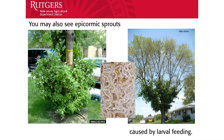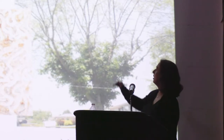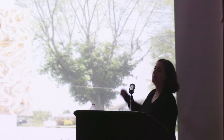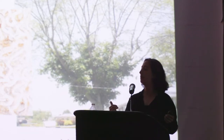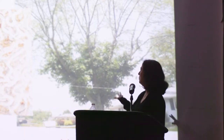You may also see a lot of epicormic sprouting in your tree. Emerald ash borer likes to start from the top of the tree and work its way down. The larvae feeding through the cambium cuts off the flow of water and nutrients, so the tree starts to die from the top down and flushes growth closer to the bottom of the stem to photosynthesize and stay alive. Those reflexive sprouts are another good indicator you might have emerald ash borer. Once you get to this stage, you may be too late to treat it, and now you're talking removal.